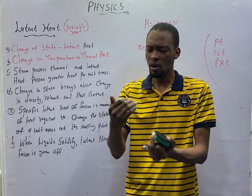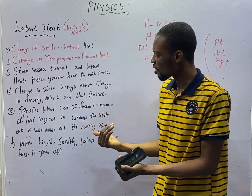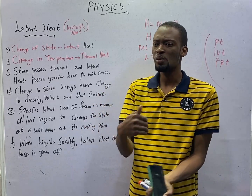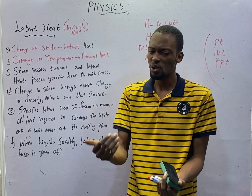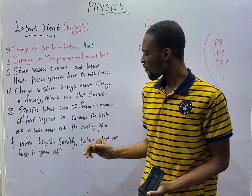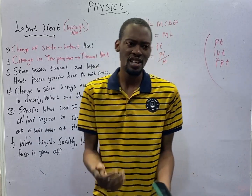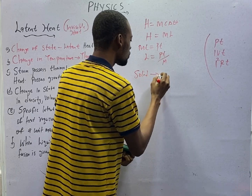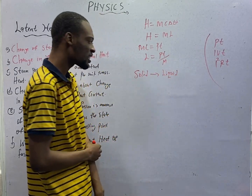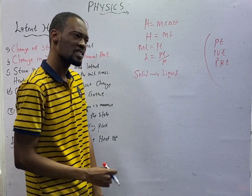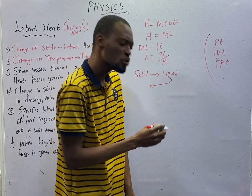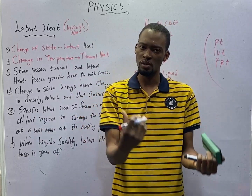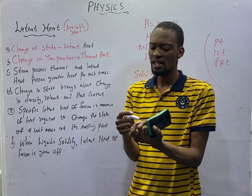When substances change from solid state to liquid at their melting point, there is no rise in temperature. When substances or matter change from liquid to solid — solid to liquid, that is latent heat of fusion. If this substance changes back from liquid to solid, it will have to lose its latent heat of fusion. It gains latent heat of fusion to change from solid to liquid; if it eventually changes from liquid to solid, the latent heat of fusion will be lost.